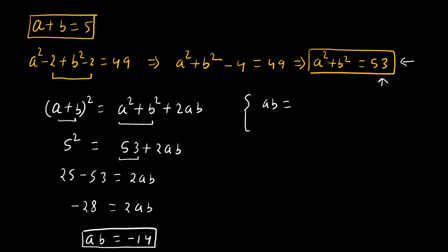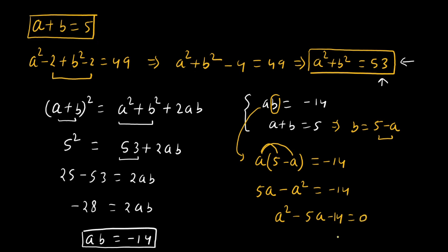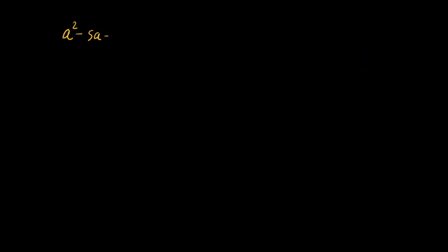We have ab = -14 and a + b = 5. This implies b = 5 - a. Substituting: a(5 - a) = -14, so 5a - a² = -14, which gives the quadratic equation a² - 5a - 14 = 0.